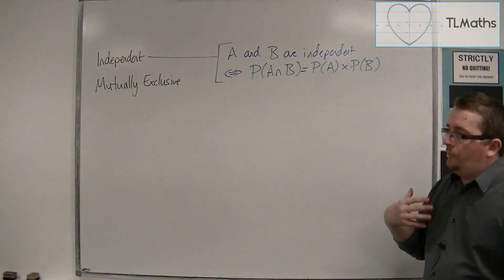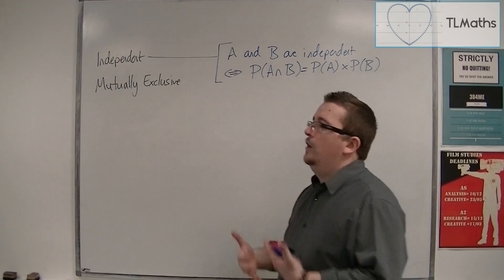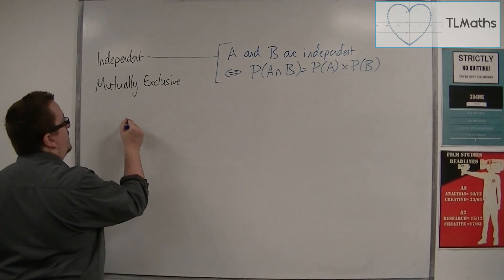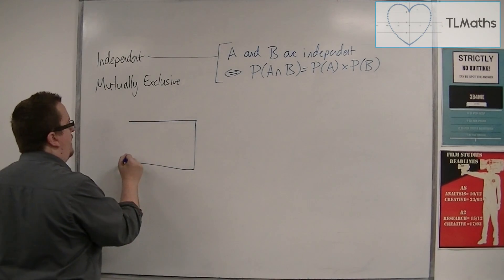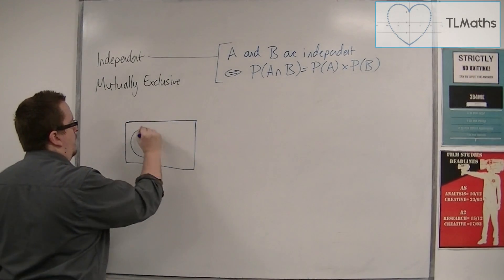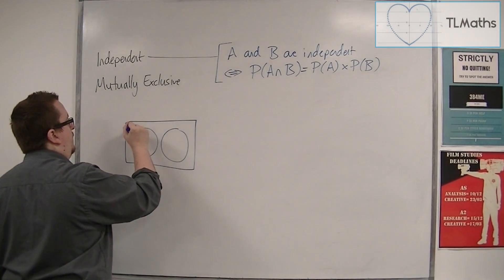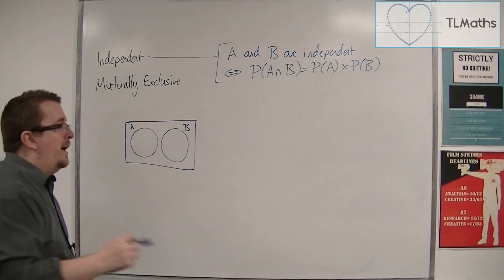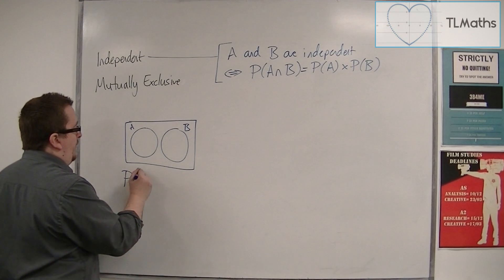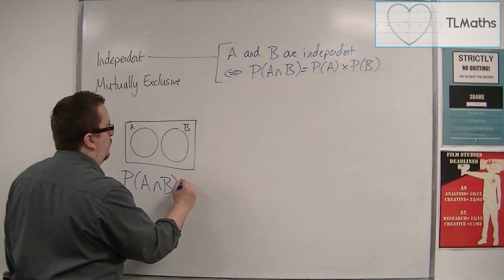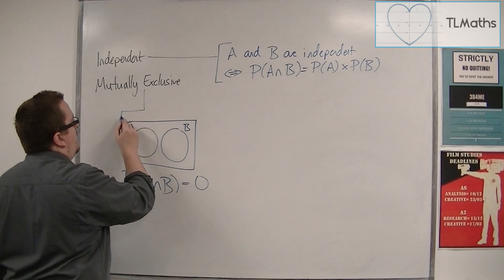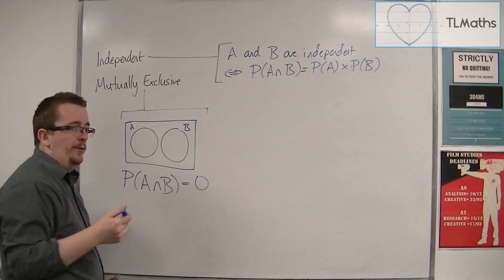So, subsequently, if they cannot happen at the same time, we could draw a Venn diagram to represent mutually exclusive events by drawing two circles that don't overlap. If there's no overlap, they cannot happen at the same time. And so the property of A intersection B, we would say, is 0. That is what it means to be mutually exclusive.